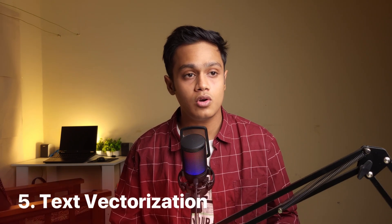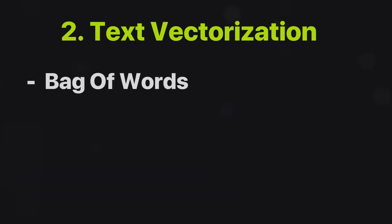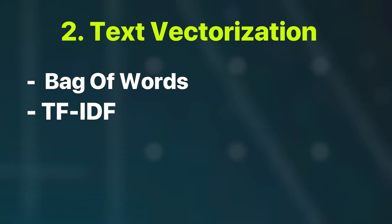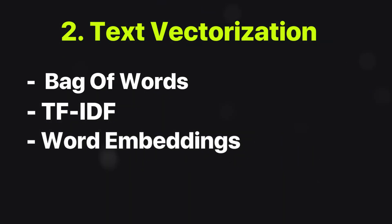Then move on to named entity recognition, which is a key step in NLP. Learn what named entity recognition is and why it is used. Once you're done with that, move on to text vectorization. These three topics are the core of generative AI RAG models: bag of words, TF-IDF, and word embeddings. Once you learn these topics, try out some basic projects like text classification or sentiment analysis. The best resource to learn NLP is a video by Krishna Naik.